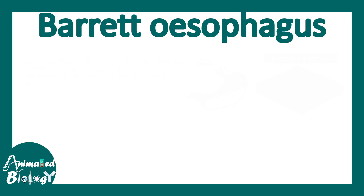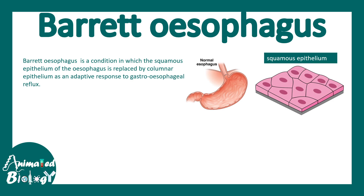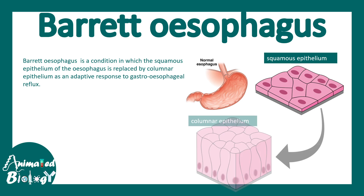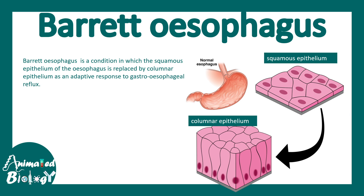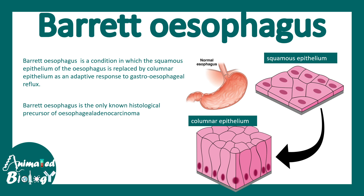In this video we'll be talking about Barrett's esophagus. Barrett's esophagus is a condition in which the squamous epithelium of the esophagus gets converted into columnar epithelium as an adaptive response towards gastroesophageal reflux. When you have GERD, to cope up with those gastric acids, the esophageal epithelium which was squamous in nature gets converted to columnar epithelium.